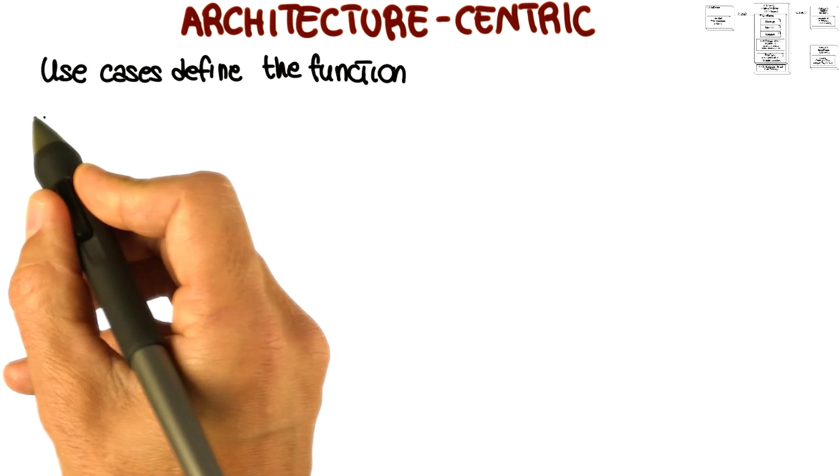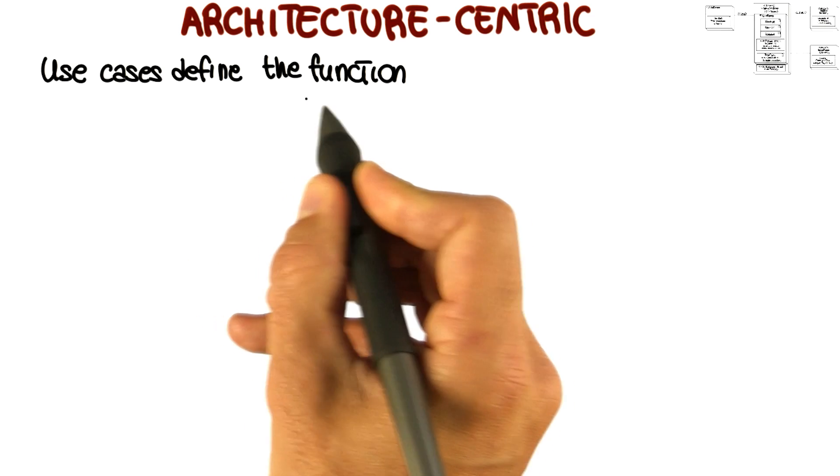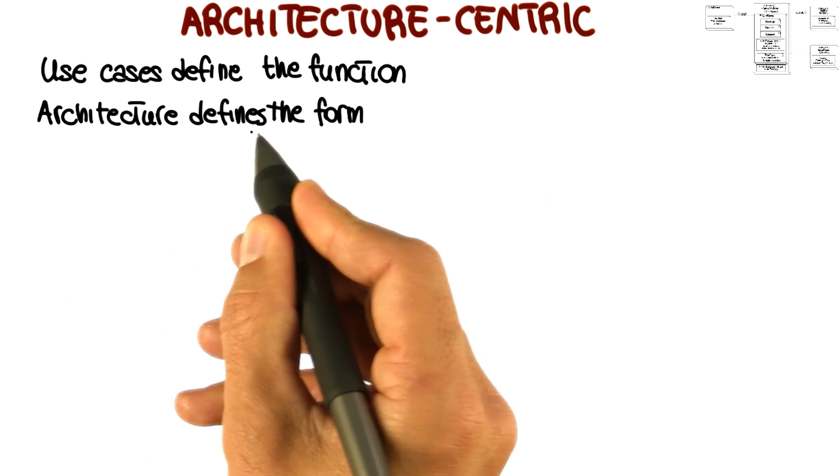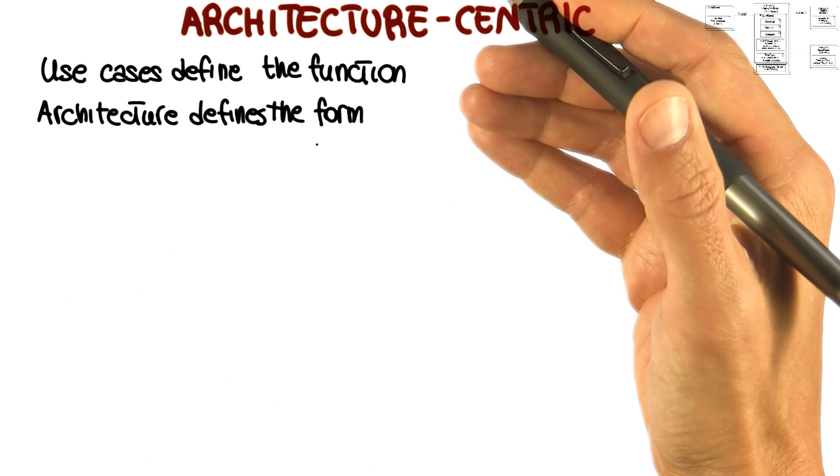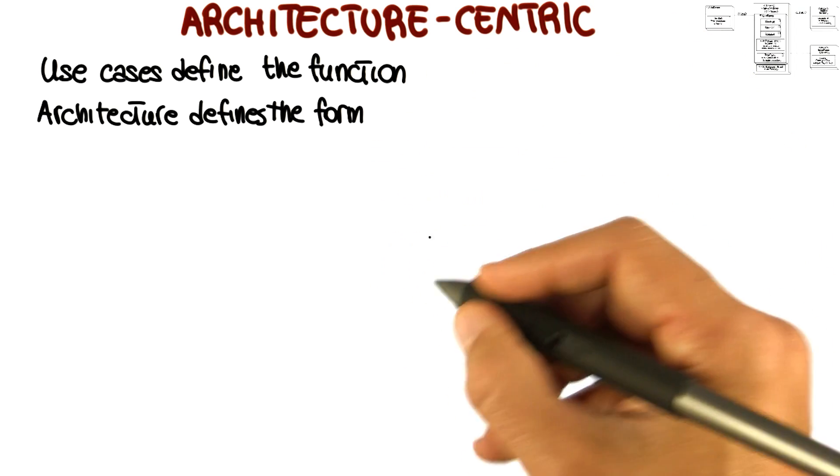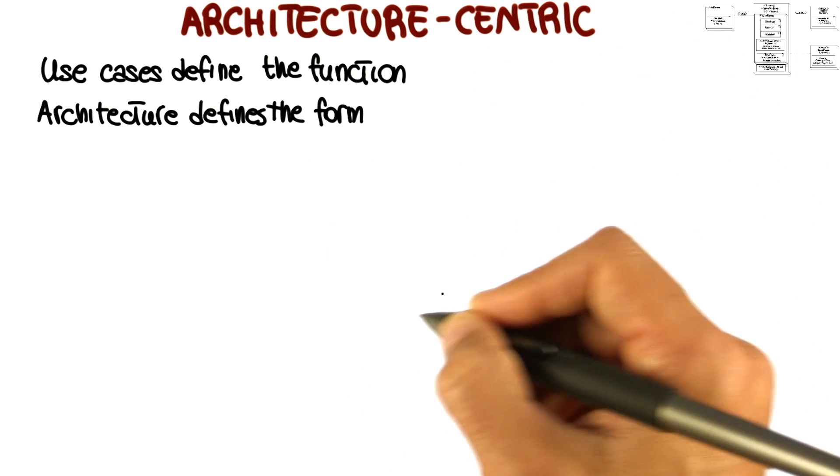Another way to see this is by saying that use cases define the function of the system, whereas architecture defines the form of the system. Use cases give the functionality, architecture tells you how the system should be structured to provide the functionality.